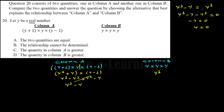Y cubed minus Y compared to Y cubed — to determine the relationship, we should test specific values. We have three cases: Y equals zero, Y equals minus 1, and Y equals 1. By substituting different values of Y, we can compare the two quantities.